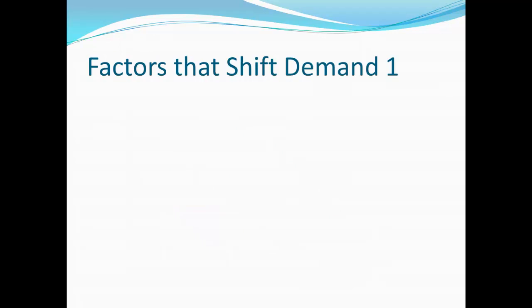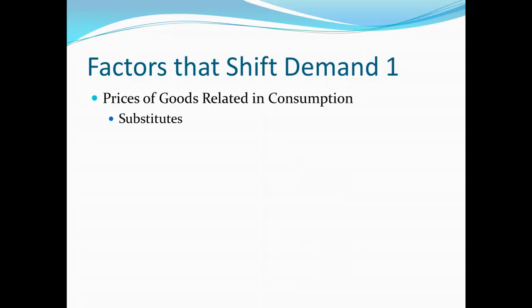Now let's turn to factors that shift demand. First, there are prices of goods that are related to each other in consumption. It's very important that a lot of the terminology is the same between goods related in production and goods related in consumption, so you need to keep in mind whether goods are related because they tend to be produced together or because they are related in consumption. First, substitutes. Substitutes in production are goods where the more you produce of one, the less you can produce of the other.